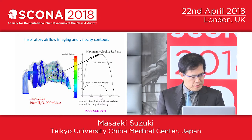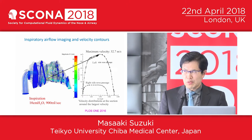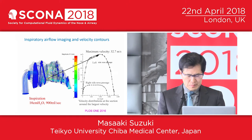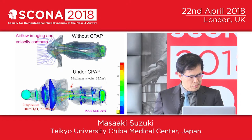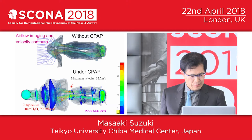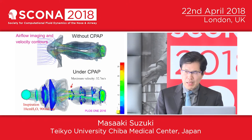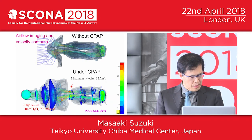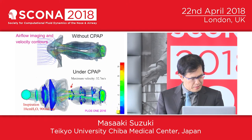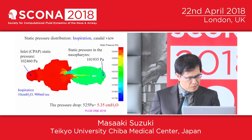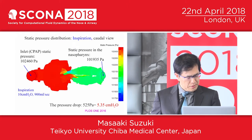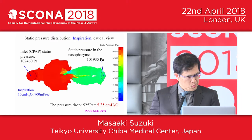In contrast, the velocity on the normal side was only 6.0 meters per second. These coronal views show the comparison of the airflow image and velocity contours for patients without CPAP and when CPAP is applied, again showing a rapid stream as high as 32.7 meters per second. This figure shows inspiratory static pressure distribution; when the condition is 10 cm water CPAP, the pressure decreases by 5.35 cm water in the nasopharynx compared with the inlet static pressure.